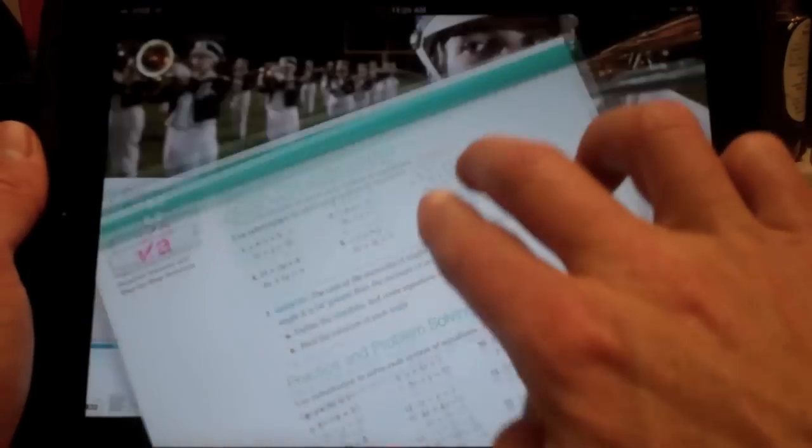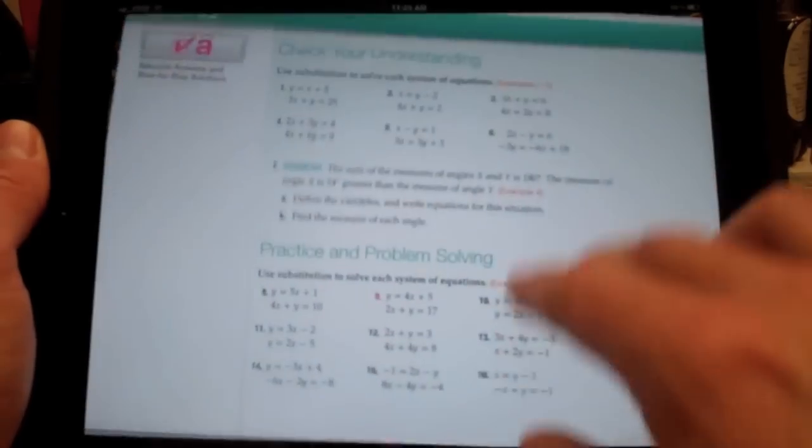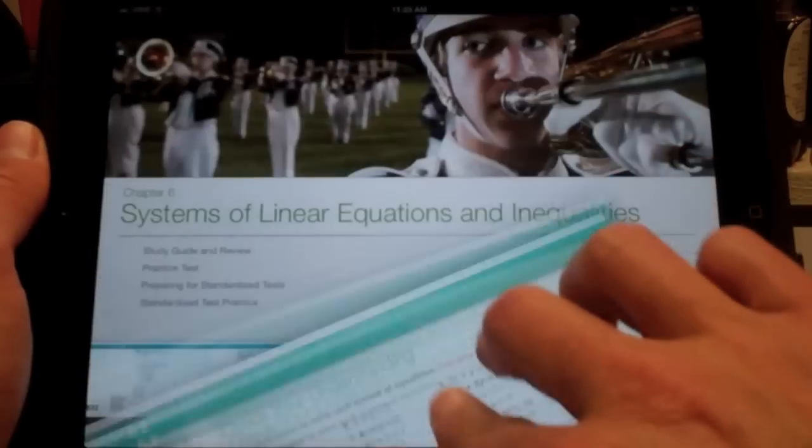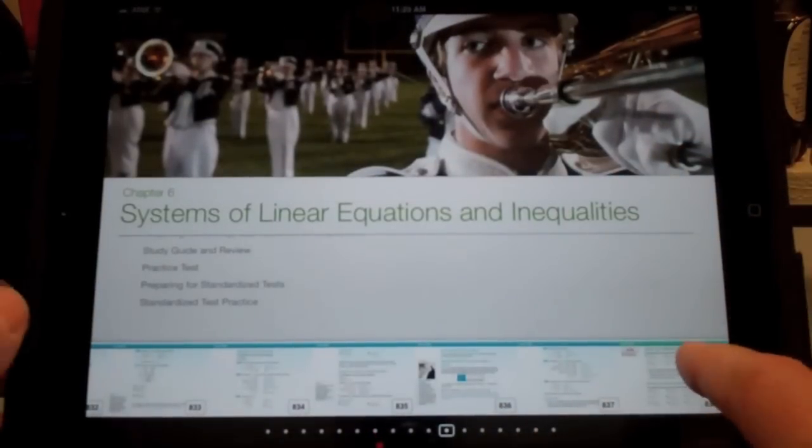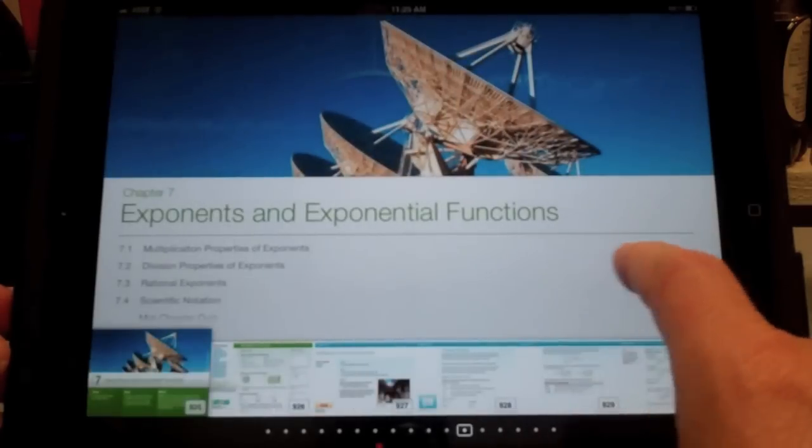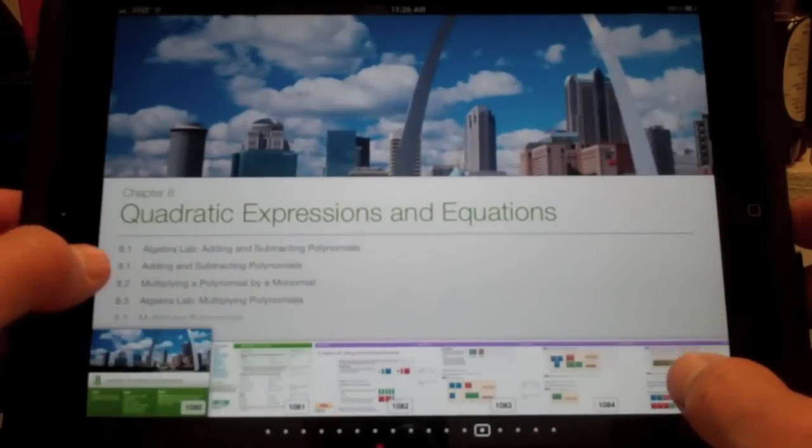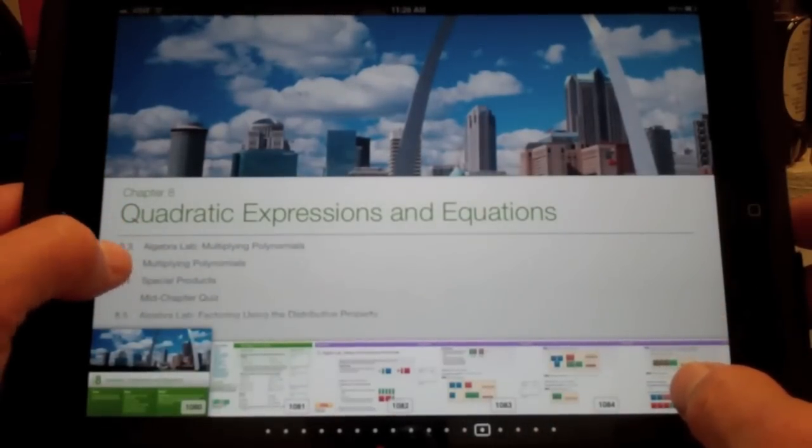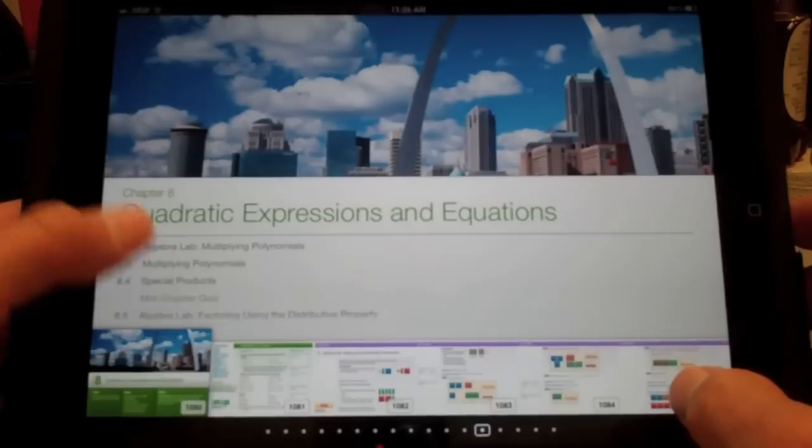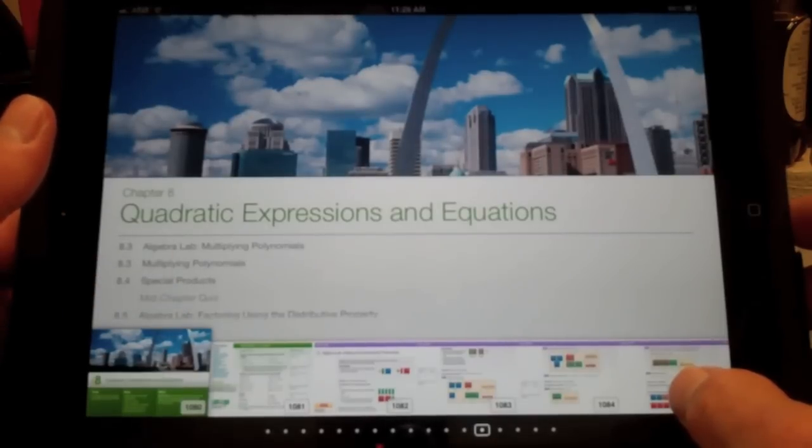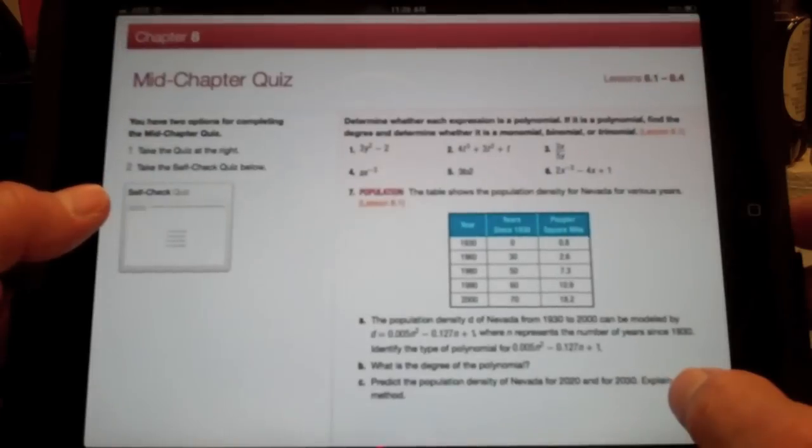I'll drag this back down into here, which again, I'm not so good at, and sometimes I'm really bad at it. I can go up here to the next section or the next chapter, Quadratic Expressions and Equations. It goes through these things. It also gives you a mid-chapter quiz, and I'm going to click on that, and I think it'll open for me.